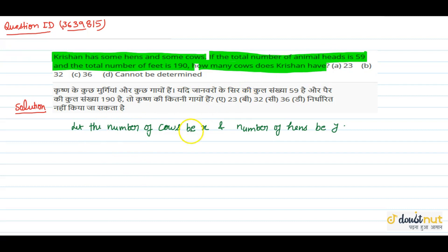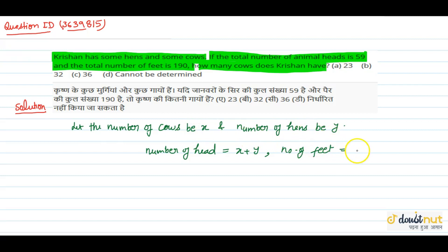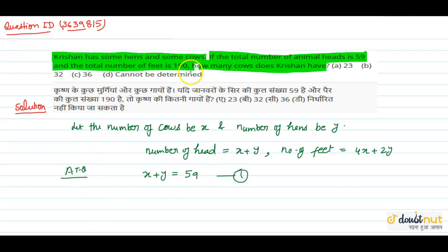The total number of heads — since both hens and cows each have one head — is x plus y. The number of feet: cows have 4 feet and hens have 2 feet, so total feet equals 4x plus 2y. From the question: x plus y equals 59, and 4x plus 2y equals 190.